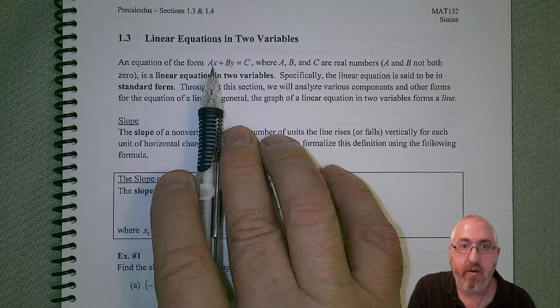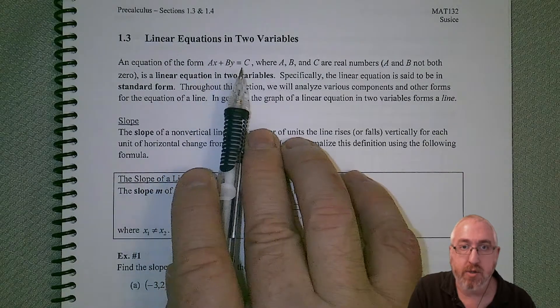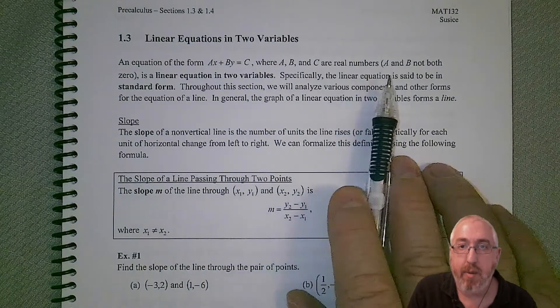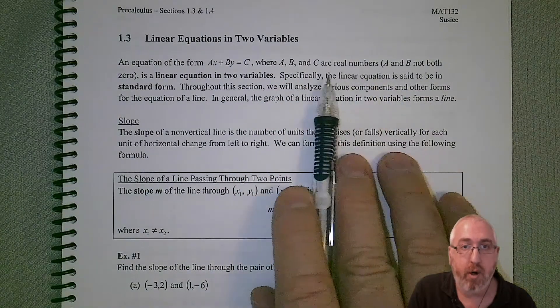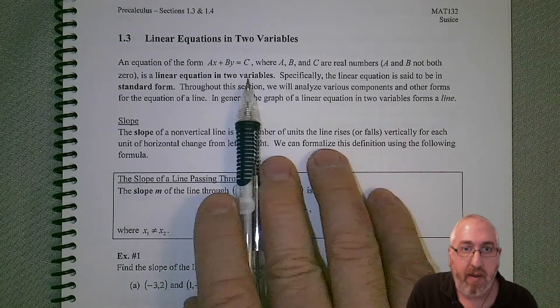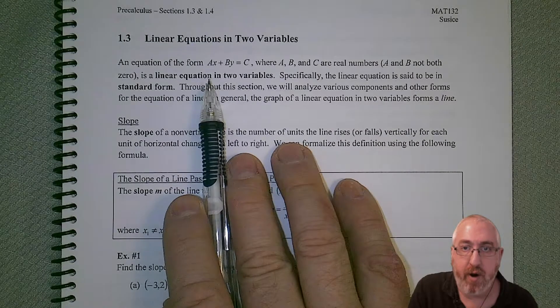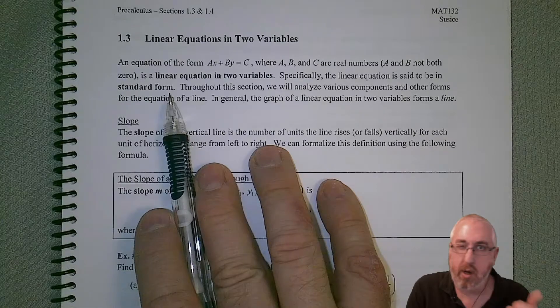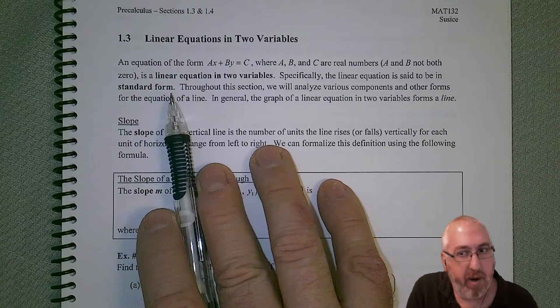We have our standard form, Ax plus By equals C, where A, B, and C are real numbers, and A and B not both zero, because otherwise we have nonsense. In this case, we'll have a linear equation in two variables. This would be our standard form. We're going to see other forms later on, which are going to be a little bit better for us, though.